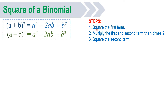Just look at the three steps. First, square the first term. The first term here is a. So a times a gives you a squared. Second step, multiply the first and second terms. We have a as the first term and b as the second term. a times b equals ab, then times 2 gives you 2ab. And the last step, square the second term. The second term here is b. b times b gives you b squared.